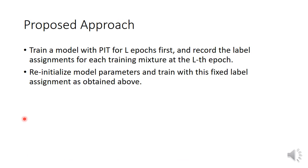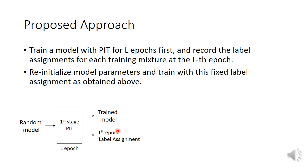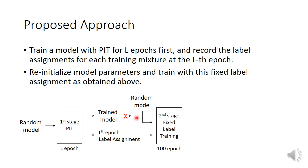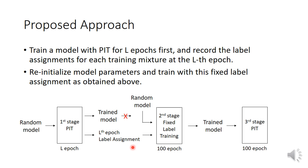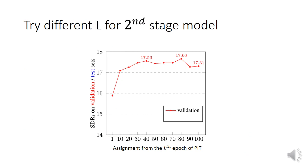Our proposed approach is conceptually similar to fixed label assignment training. We obtain the fixed assignment from a PIT model: we train a model using PIT for L epochs first and record the label assignment choices for each training mixture at epoch L. Instead of using that trained model, we reinitialize the model parameters and train a new model with this fixed label assignment for 100 epochs. After this second stage, we can continue training with PIT for another 100 epochs. We tested different values of L — ranging from 1, 10, 20, to 100 — each followed by 100 epochs of fixed assignment training. The red dot indicates the validation performance after 100 epochs of second-stage training.